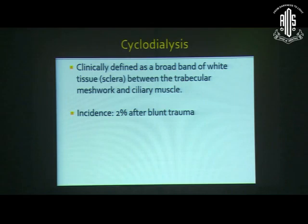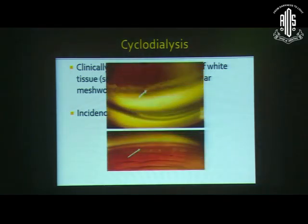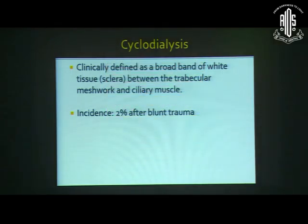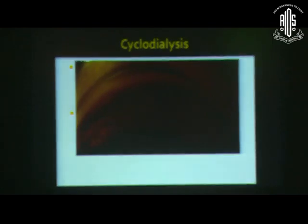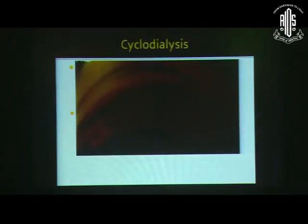Cyclodialysis is clinically defined as a broad band of white tissue — that is sclera — between the trabecular meshwork and the iris. The incidence is 2% after blunt trauma. Cyclodialysis usually results in a decrease in IOP and is a protective factor against a rise in IOP, even if an eye is harboring angle recession. Gonioscopy is quite difficult in an eye with hypotony and cyclodialysis; we can see corneal indentation folds, and gonioscopy in such eyes can be done under viscoelastic cover.